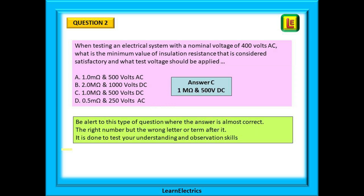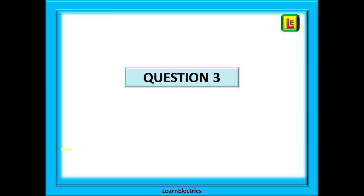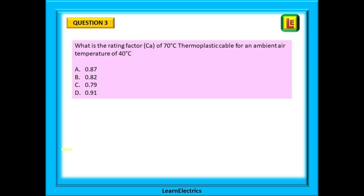Be very alert to this type of question where the answer is almost correct — the right number but the wrong letter or term after it. It is done on purpose to test your understanding and observation skills, and it catches many people out. And another question example: what is the rating factor CA of 70 degrees centigrade thermoplastic cable for an ambient air temperature of 40 degrees centigrade? Let's find the answer.